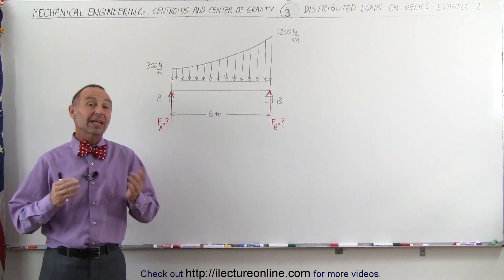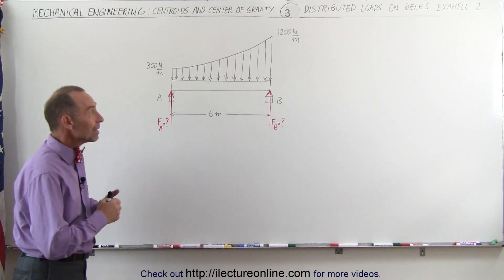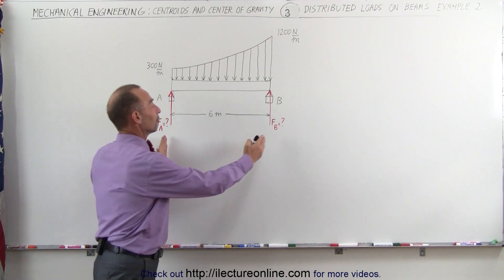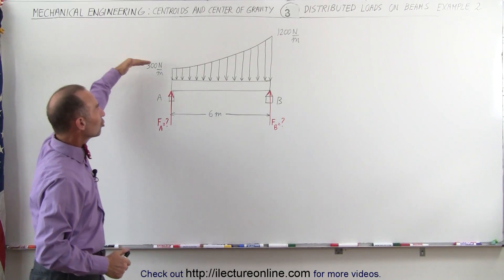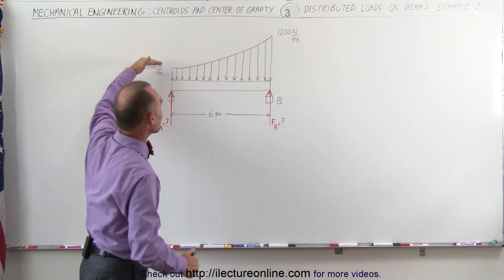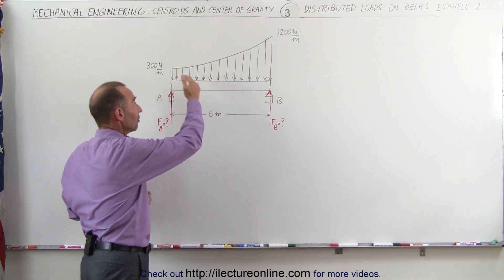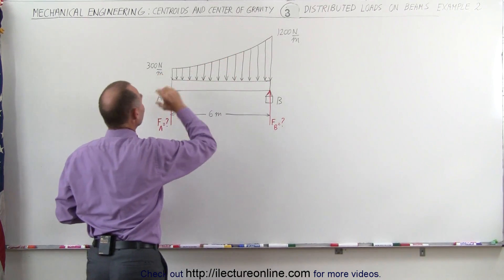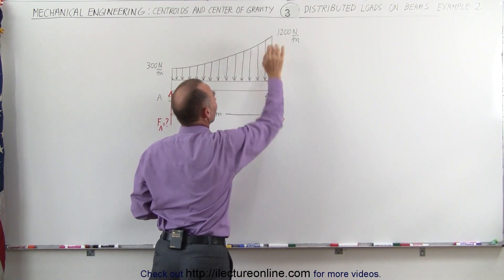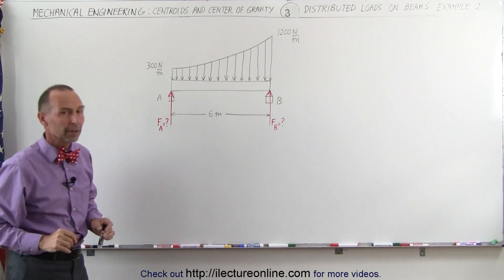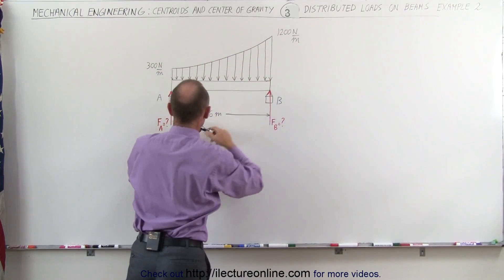Welcome to iElectronLine. Here's our next example of how to calculate how a distributed load affects a beam and how to find the reactionary forces on the two supports at A and B. Notice that the shape of the curve is a parabola. The force on the left side starts at 300 newtons per meter and ends on the right side at 1200 newtons per meter — a parabolic shape on top of a rectangular shape.